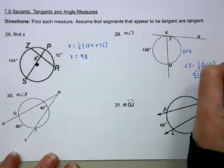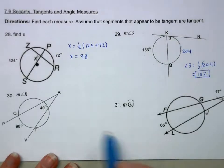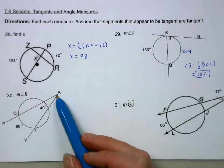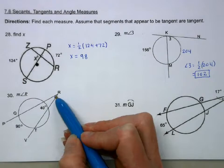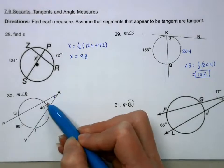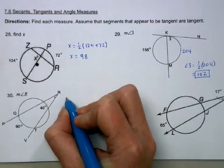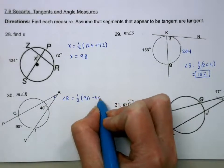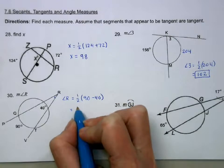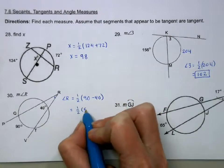Okay, if it meets on the outside, this angle is going to be 1 half the outside arc minus the inside arc. So R is going to be 1 half of 90 minus 40, which is 1 half of 50. Half of 50 is 25.